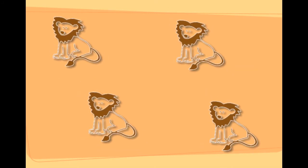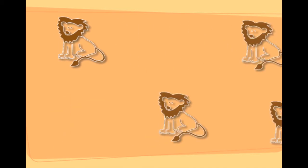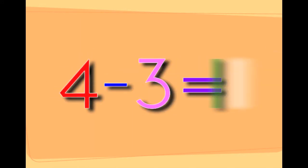These are four lions. Taking three lions away from the four lions will leave you with one lion. Four minus three equals one.